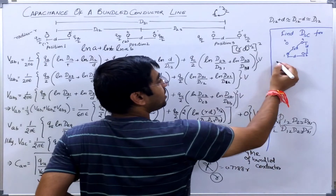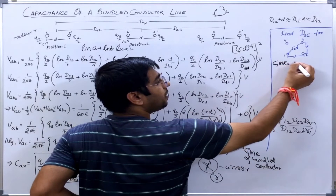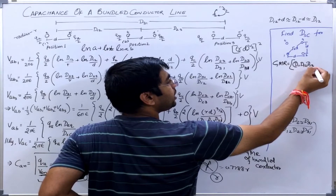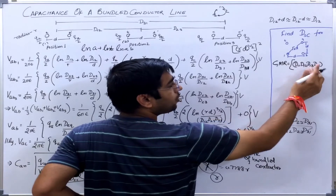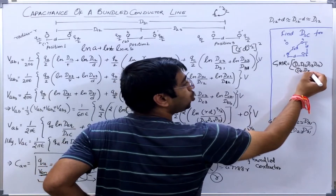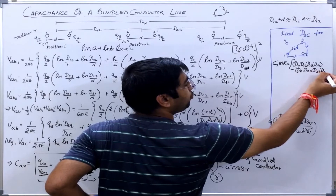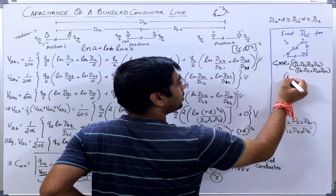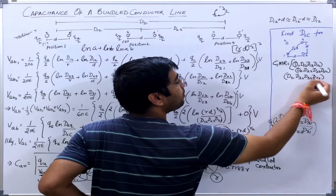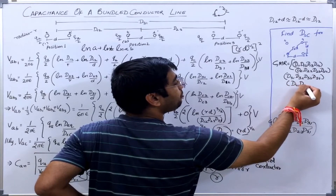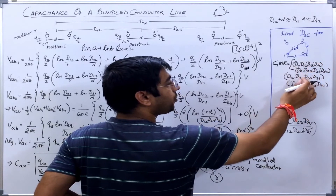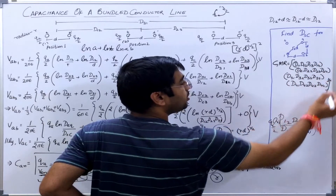GMR is simply the product of all mutual and self distances. For strand 1: d11, d12, d13, d14. For strand 2: d21, d22, d23, d24. For strand 3: d31, d32, d33, d34. For strand 4: d41, d42, d43, d44. That gives 4×4 = 16 terms, so the whole product is raised to the power 1 by 16.